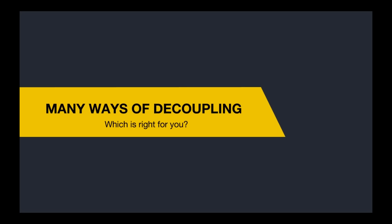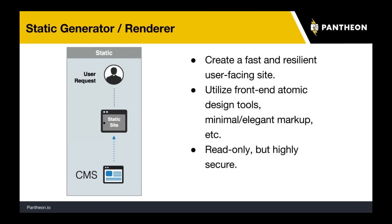The first and probably most popular method for doing a decoupled implementation with Drupal is to have some sort of static site generator or static renderer. In this case, you have Drupal as your CMS — administrators and content editors are using it as per normal — and then something else, whether run once when you're ready to publish or pulling from the Drupal backend in real time, generates static HTML pages out of the data in Drupal. The benefits really are that you can separate the concerns.